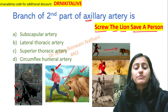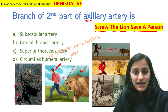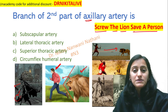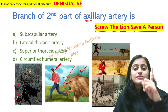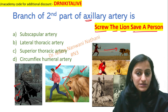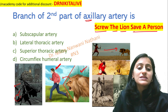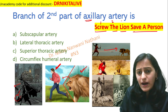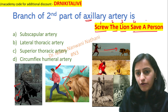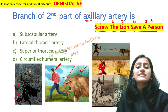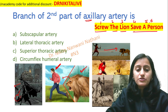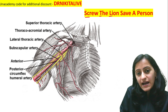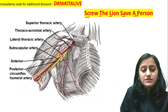Remember: axe helps you remember axillary artery — reaching the forest, sees the lion running behind the person. The mnemonic is 'Screw the lion, save a person.' These are six words, representing the six branches of the axillary artery.